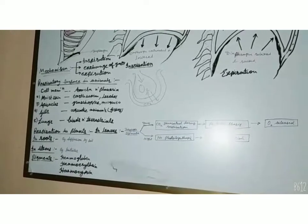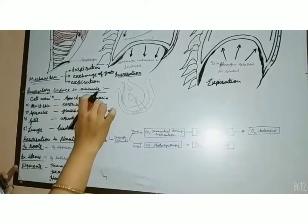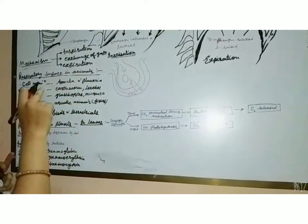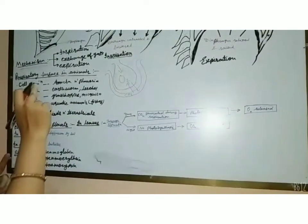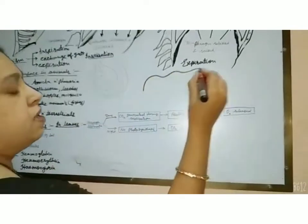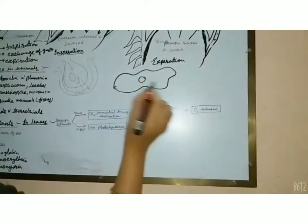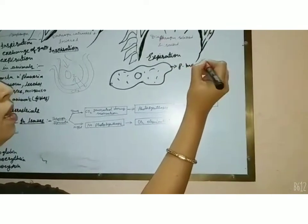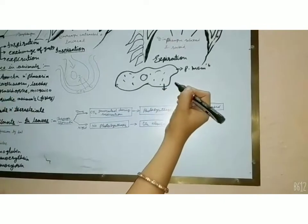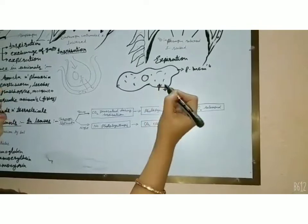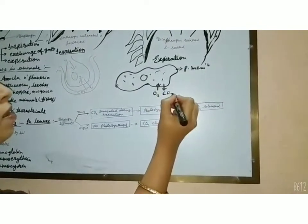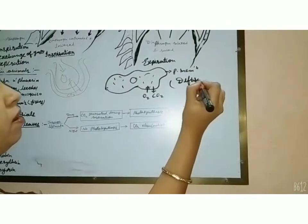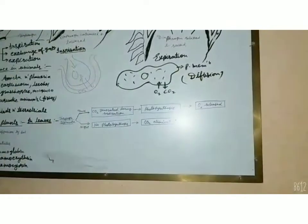First, we discuss the respiratory surface in unicellular organisms such as amoeba and some flatworms such as planaria. These are unicellular microscopic organisms that exchange gases through diffusion, and the surface in them is their body wall. The plasma membrane is the outermost covering of their body, through which small molecules of oxygen and carbon dioxide cross by diffusion and exchange takes place. So diffusion is the method in amoeba and planaria.